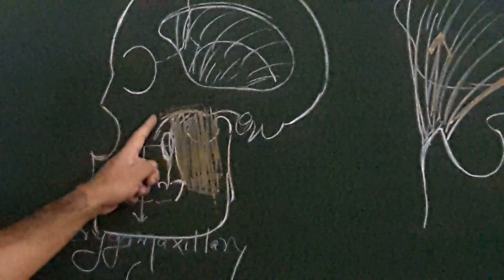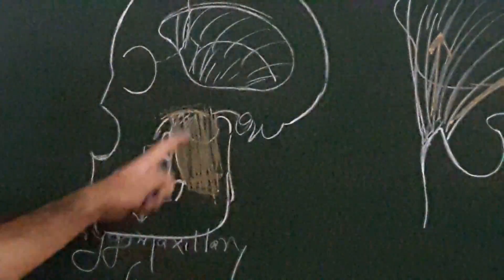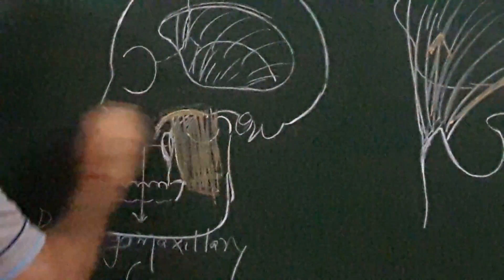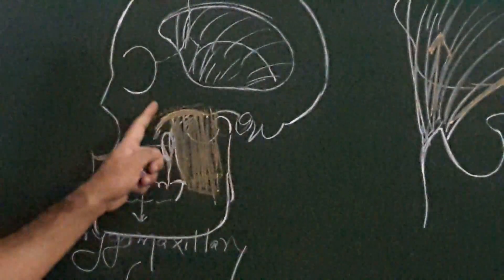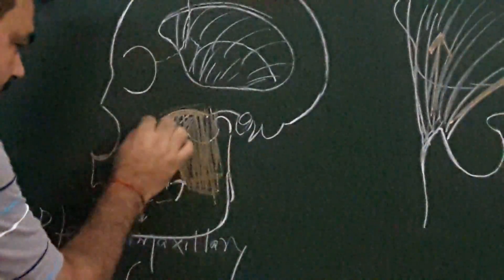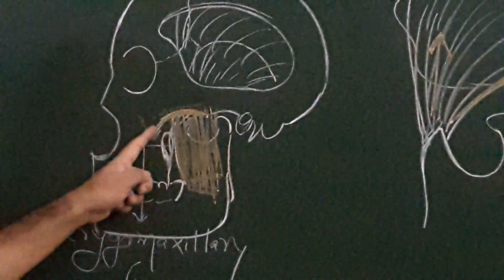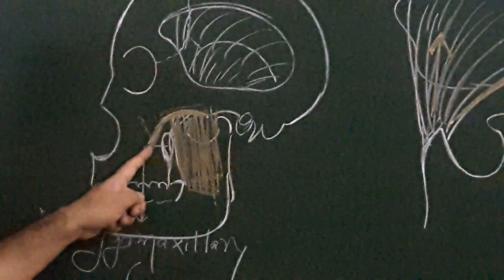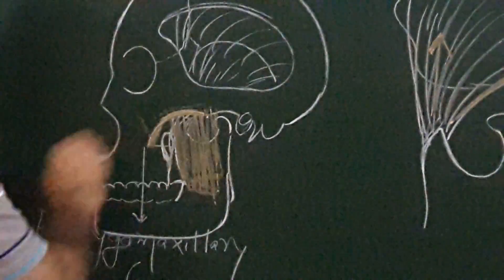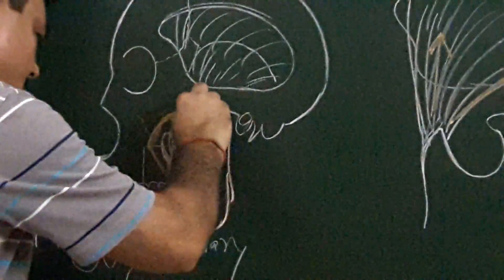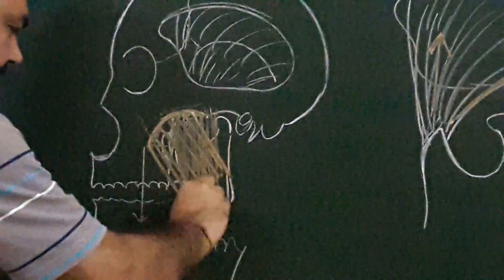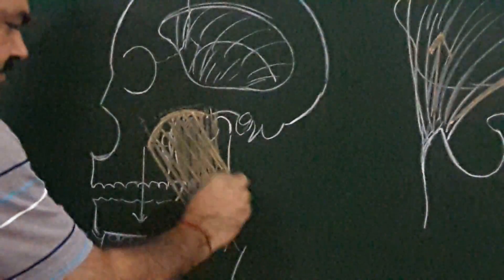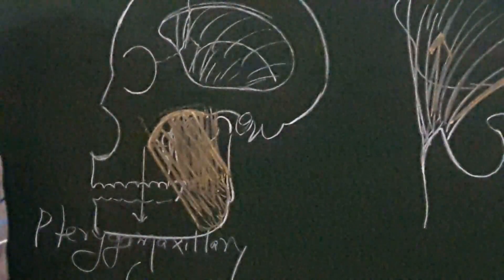The superficial fibers arise from the inferior border of the anterior two-thirds of the zygomatic arch, and also from the zygomatic process of the maxilla. The direction of these fibers is directed downward, backward, and slightly laterally, and inserted on the lateral surface of the ramus of the mandible and also on the angle of the mandible. So you have seen deep fiber, middle fibers, and superficial fiber.